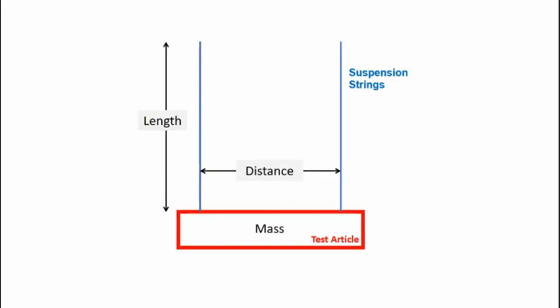The period of oscillation is measured and used to calculate the moment of inertia. Here's a simplified diagram of the system. I need to know the length of the strings. I need to know the distance between the two strings and those two strings are centered about the center of gravity of the test article. I need to know the mass of the test article. Now this system will measure the moment of inertia about the object's center of gravity.